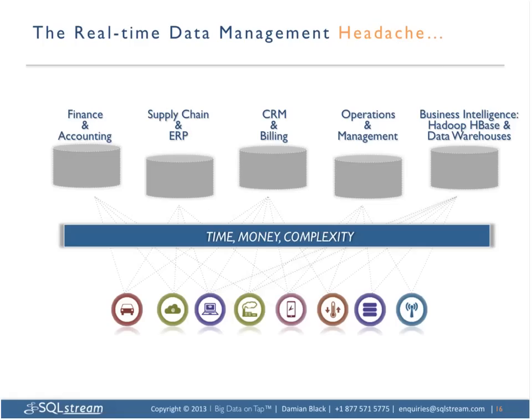If you look at the headache in terms of data transformation and collecting, many applications in your organization can take advantage of the information if only you could get it in the right format at the right time. With all these log files, sensors, cell phones, and smart devices generating data, you have to combine the information so each application can process it, put it into data warehouses and Hadoop repositories. Often you're forced to do point-to-point translators and connectors — dealing with an N times M mesh — which costs money, time, and is complicated.